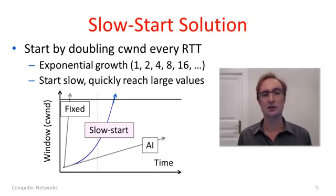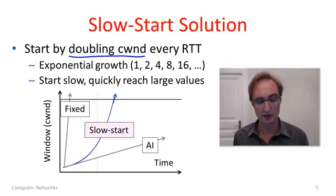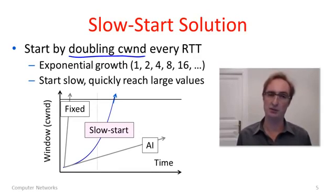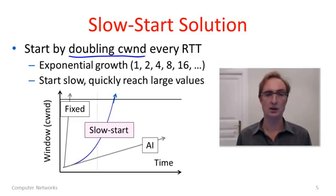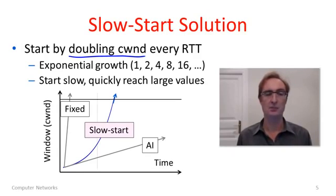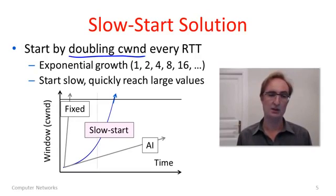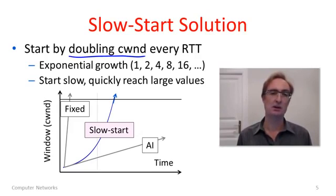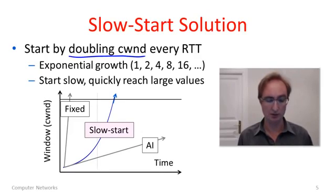Slow start is the solution to this problem. Slow start doubles the congestion window every round trip time, so it's adapted to the RTT, which we can measure. By doubling the congestion window we get exponential growth: 1, 2, 4, 8, 16. The growth is initially fairly slow but rapidly becomes very large — that's what exponentials do. This means it reaches large values very quickly, but it starts off more softly, so it tends not to overshoot as much.